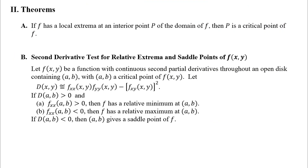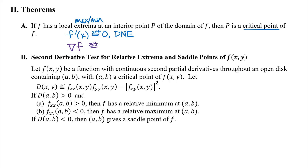This first theorem corresponds to Fermat's theorem from Calculus 1. It says that if f has a local extremum at an interior point of its domain, then that point is a critical point of f. So to do a local max/min problem, you start by finding critical points. In Calculus 1 that meant taking the derivative and setting it equal to zero, and also considering where the derivative does not exist. For multivariable functions the same idea applies: you take the gradient, set it equal to the zero vector, and think about where the gradient does not exist.